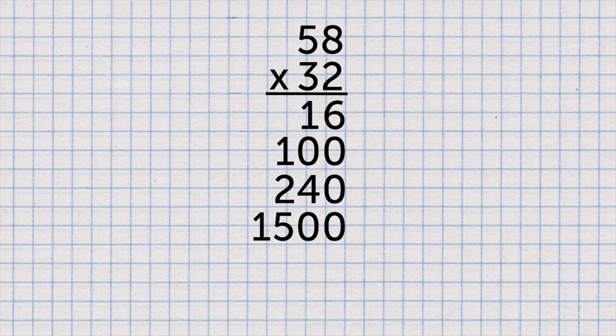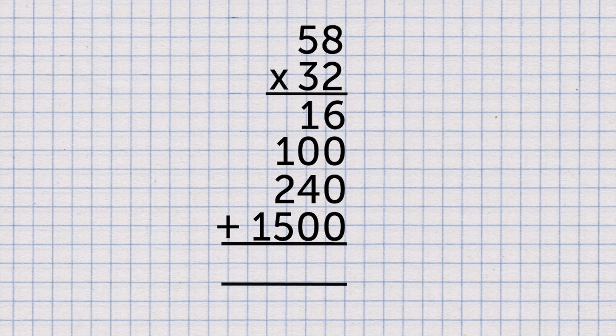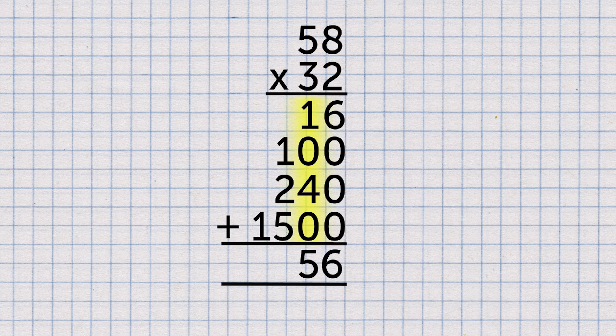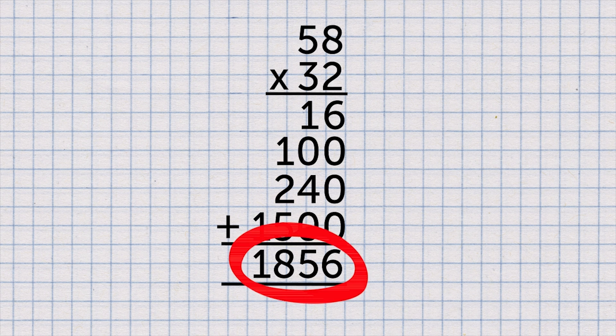Add these numbers together. 6 add 0 add 0 add 0 is 6. 1 add 0 add 4 add 0 is 5. 1 add 2 add 5 is 8. 1 add nothing else is 1. 1,856.